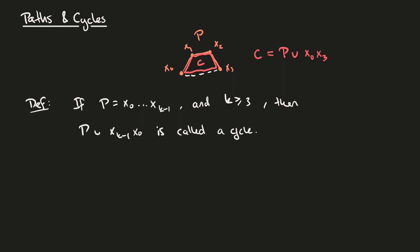Notice that because we're just adding an additional edge to a path, we can't have repeat vertices in a cycle as well. We'll use a similar notation for cycles as for paths, so for one thing we can refer to the cycle by its sequence of vertices, so in this case we have x0, x1, x2, x3, but now x0 again because we're going all the way around.